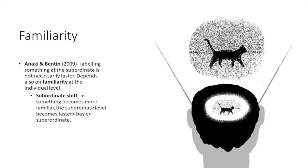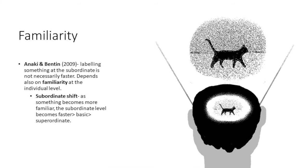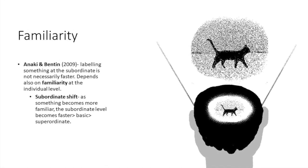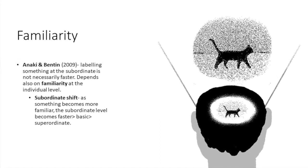Familiarity. Anaki and Benton in 2009 stated that labeling something at the subordinate level is not necessarily faster and that this depends on familiarity at the individual level.